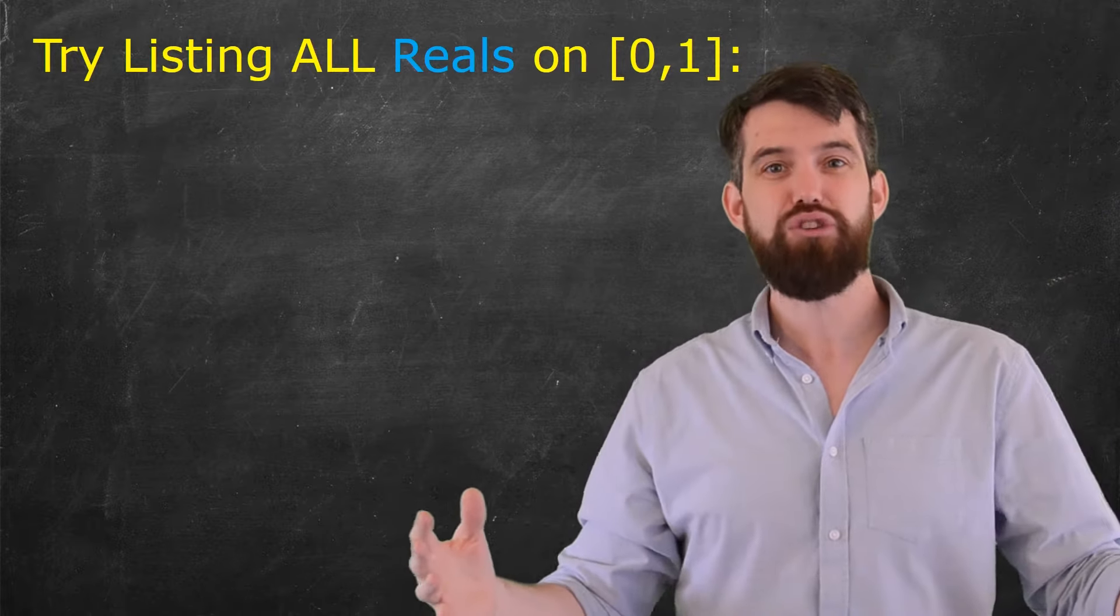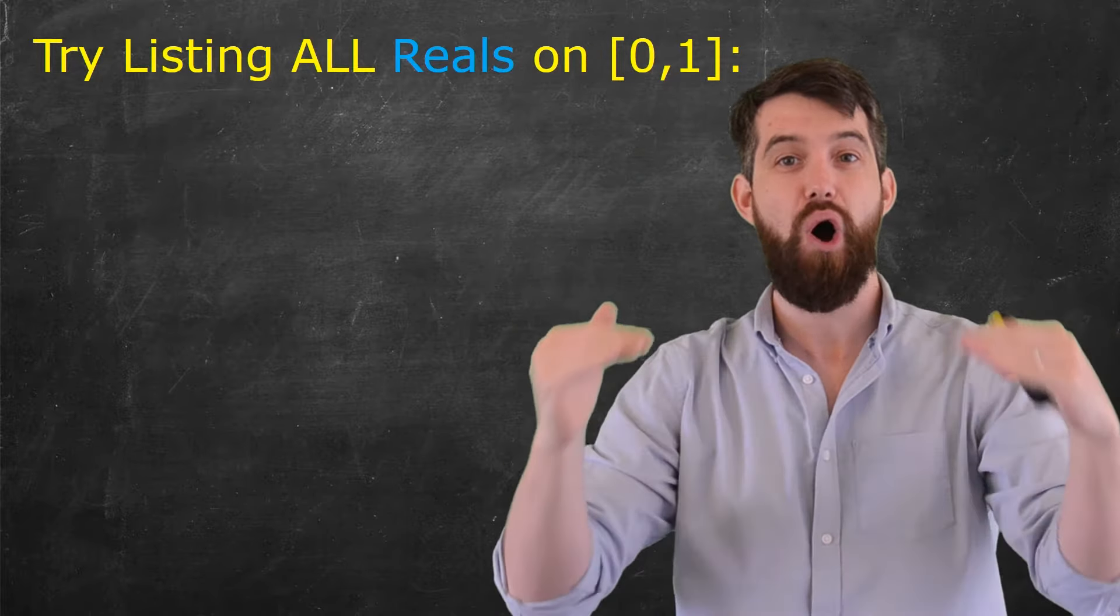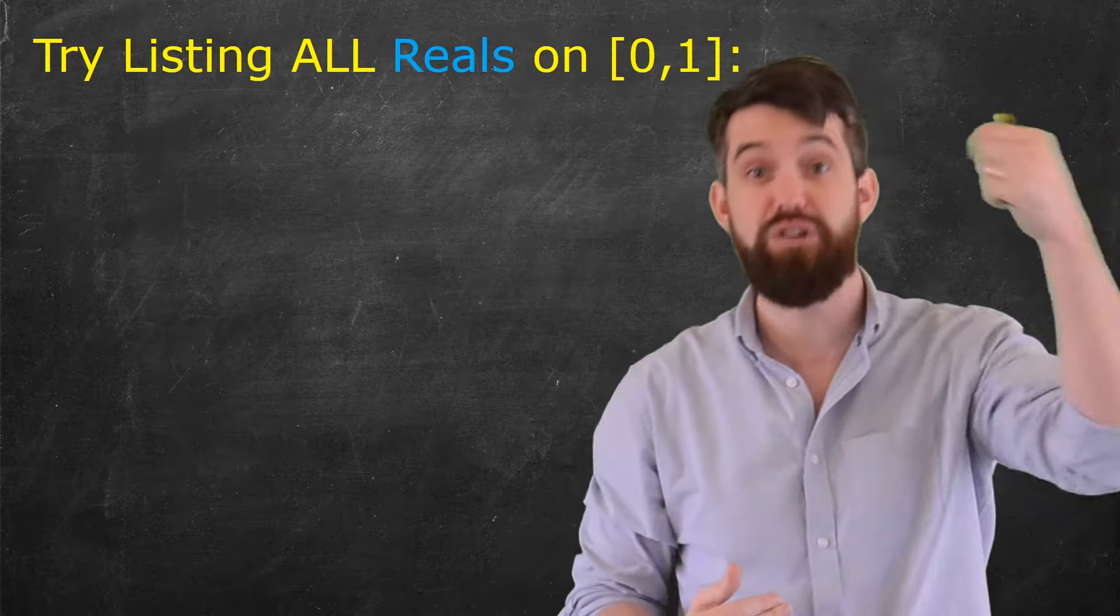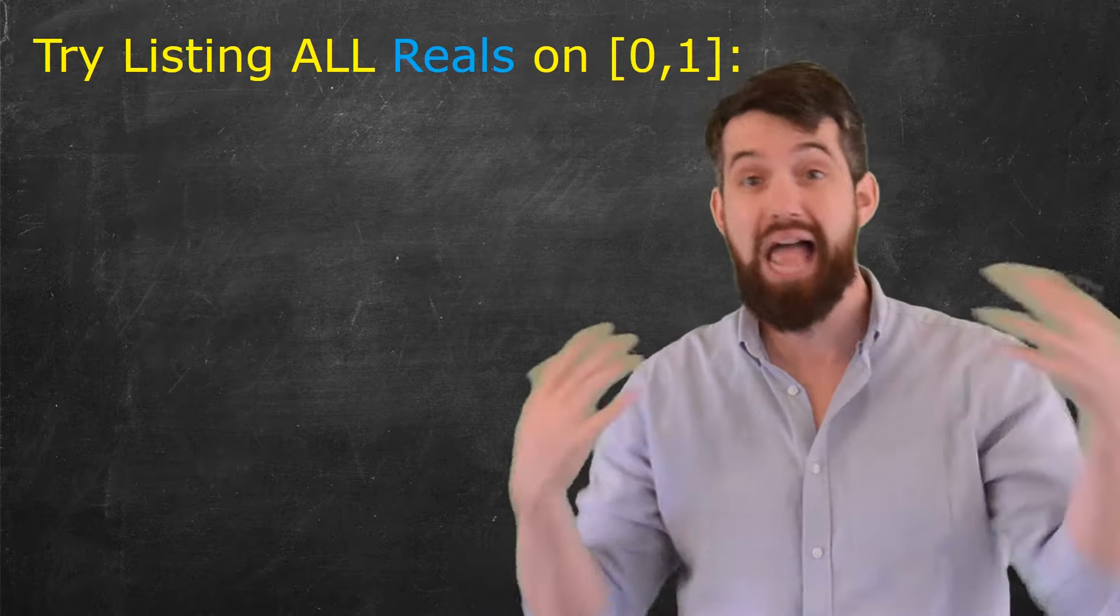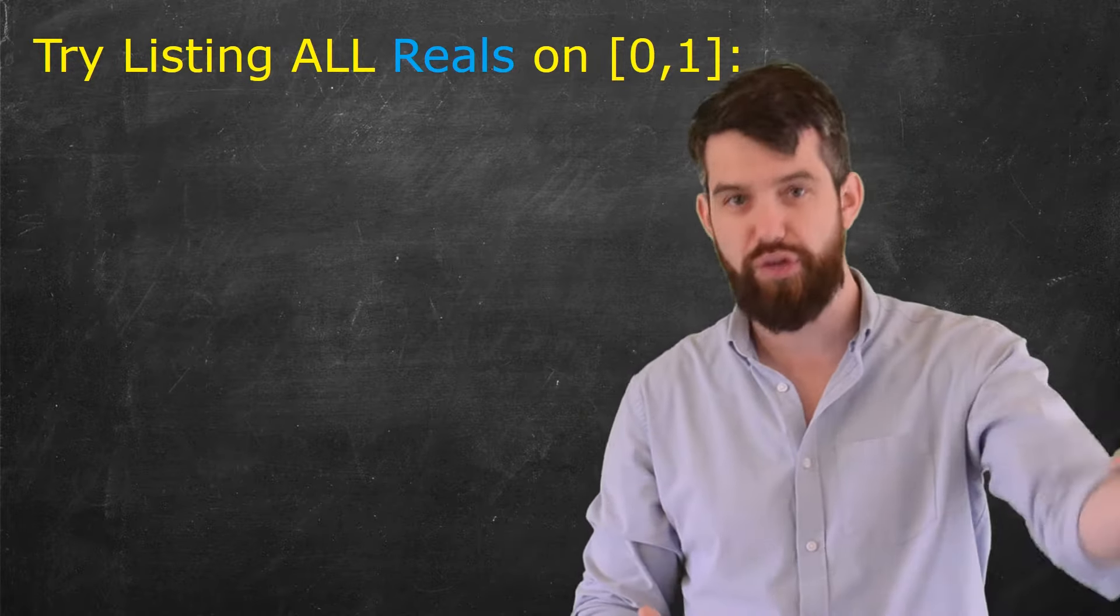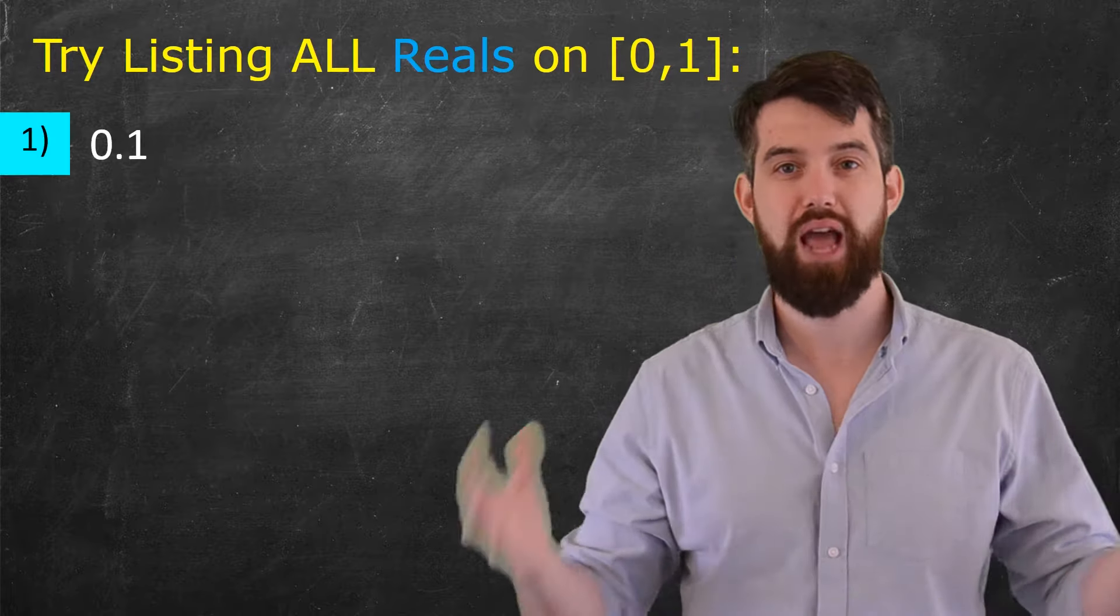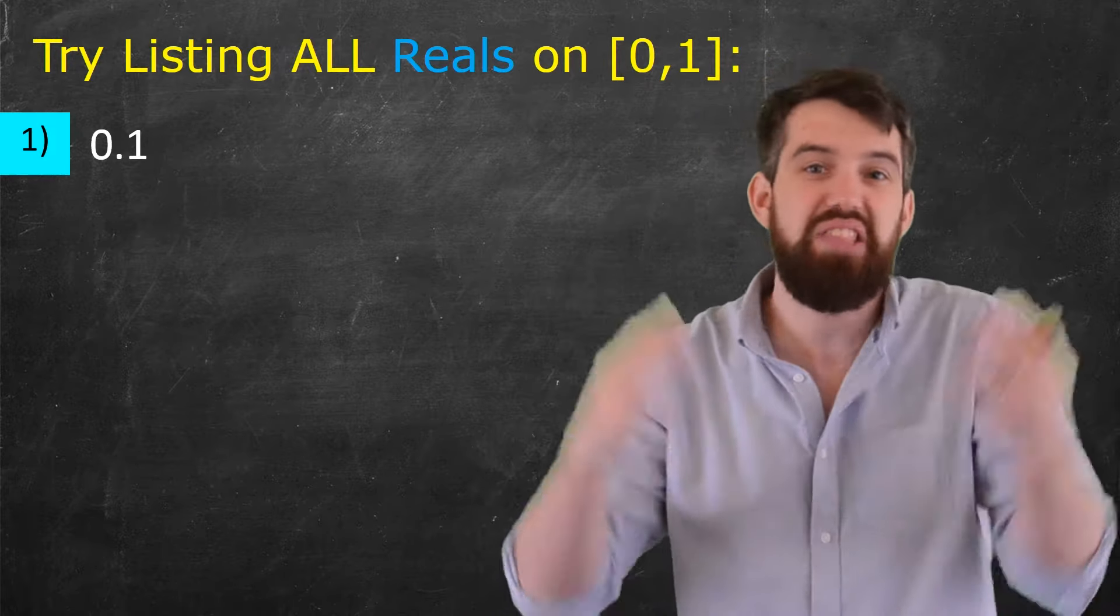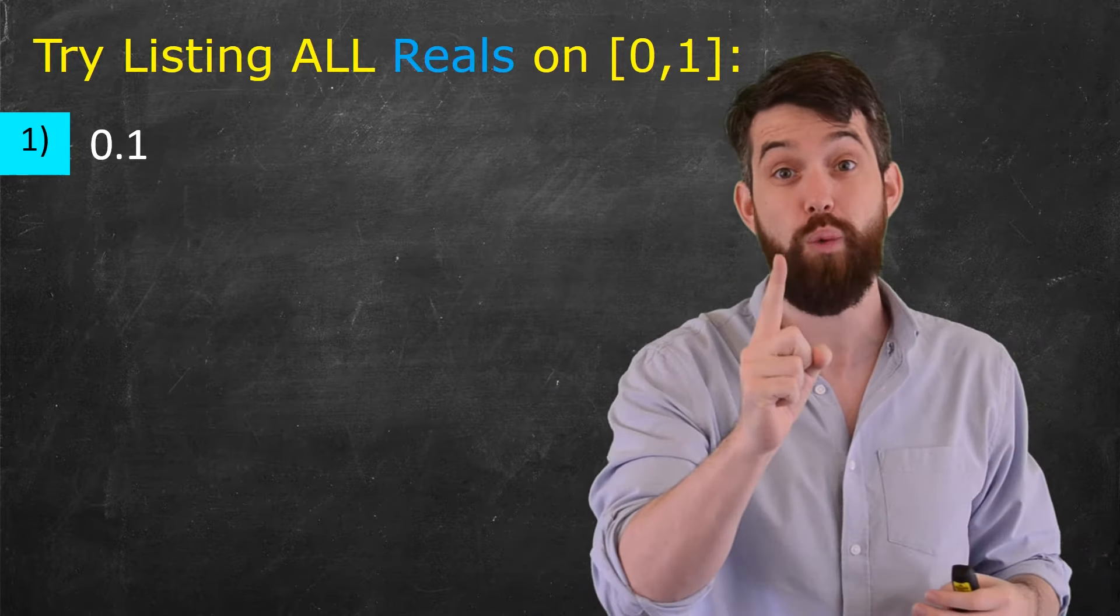So what I'm going to do is I'm going to try to list all of the different real numbers. Let's just make an infinite list. It'll be a first, a second, a third, and a fourth lined up with the first integer, the second integer, the third integer, and the fourth integer. Now, I'm going to sort of make up which of these real numbers I want to go first and second. They could be anything. How about the first one could be 0.1? That's a real number in between 0 and 1.